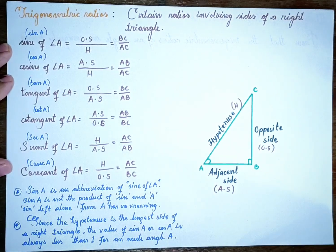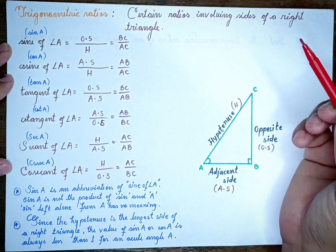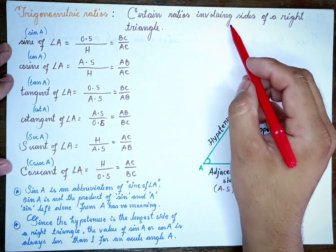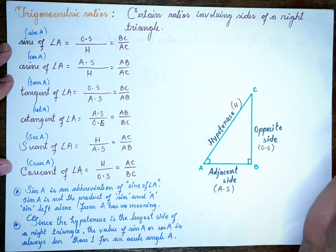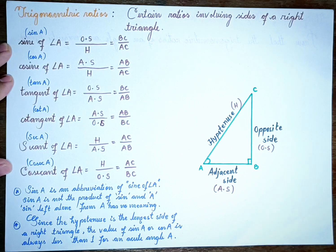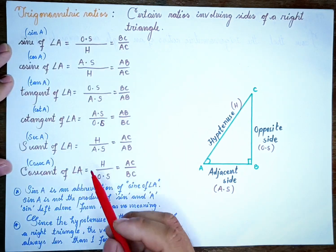There are trigonometric ratios, which are certain ratios involving the sides of a right angle triangle. There is a divide involved, and then the trigonometric ratios apply.